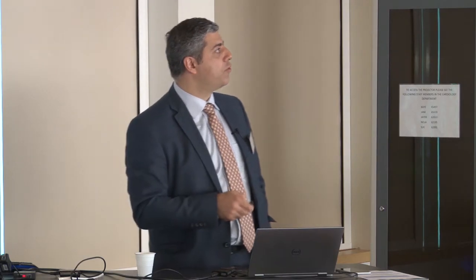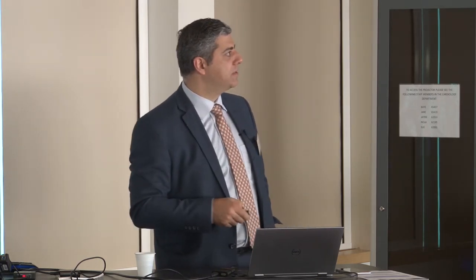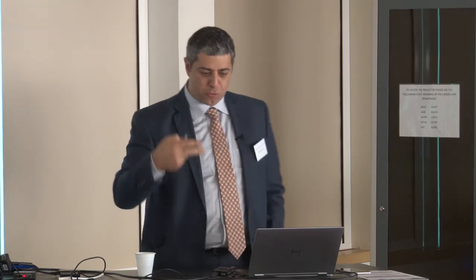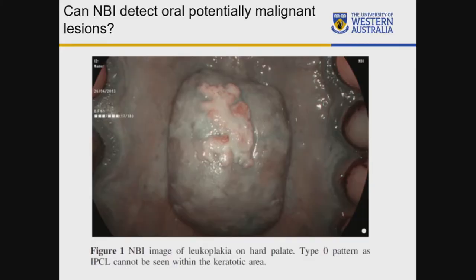We came up with a new type we call Type 0: you cannot see IPCL through the thick area, and you're limited to going around the margin to assess where the leukoplakia extends to. I haven't seen any other papers that have adopted Type 0, but I believe it should be introduced because I sincerely believe you cannot accurately assess IPCL through thick keratotic material.